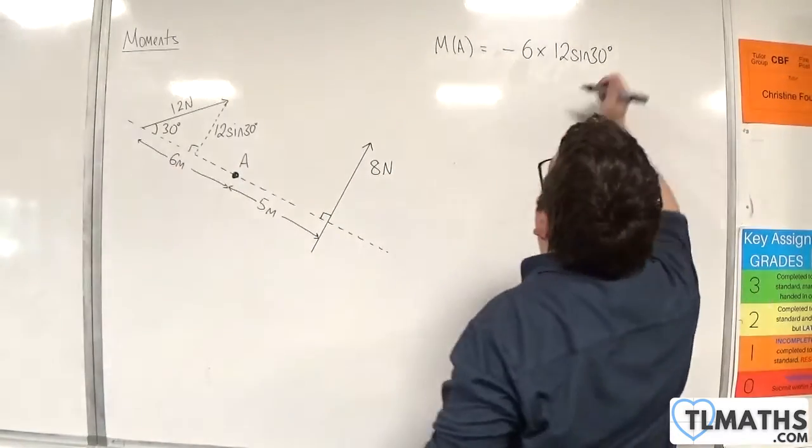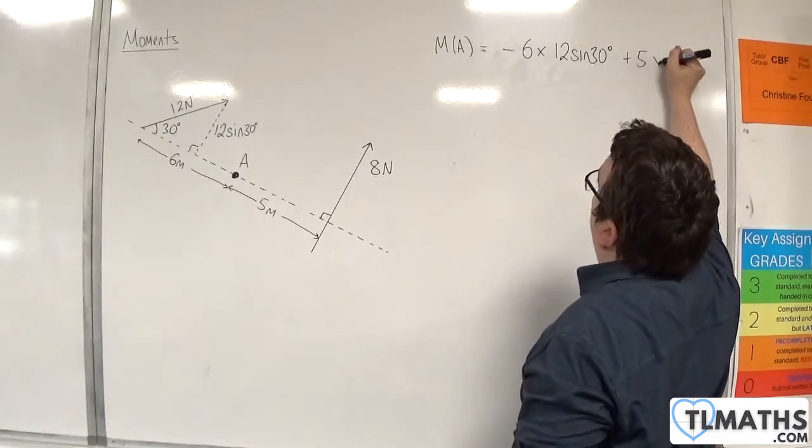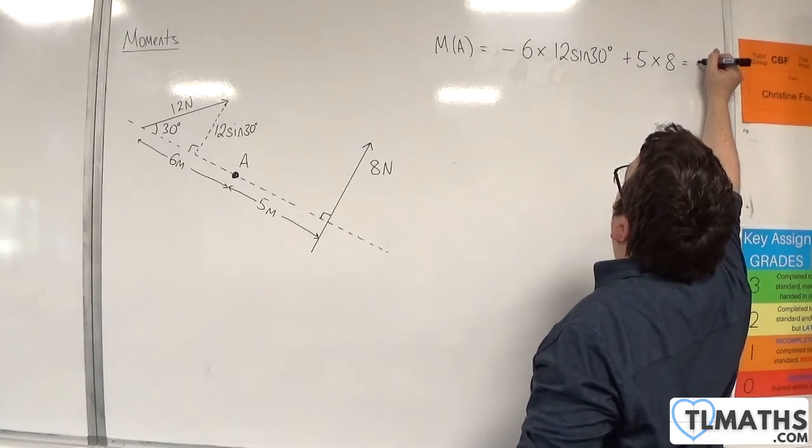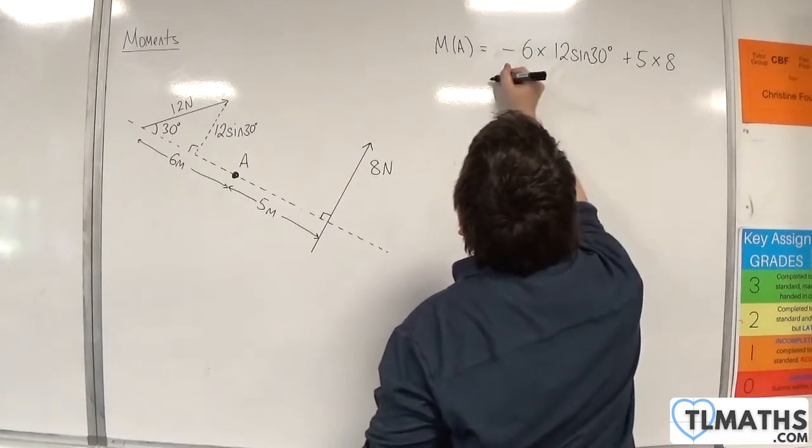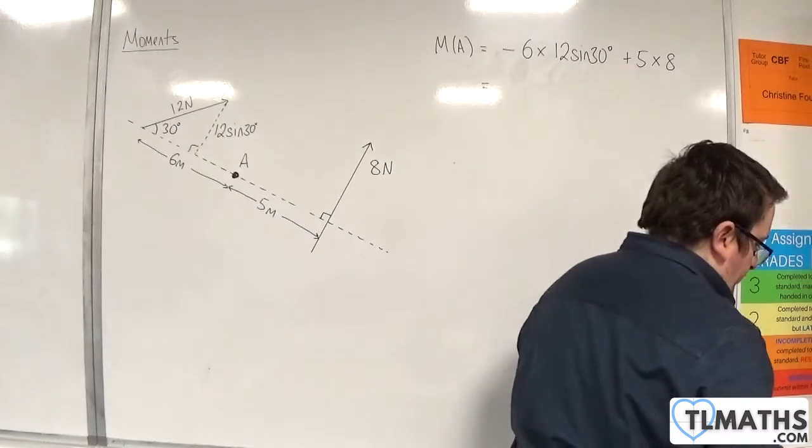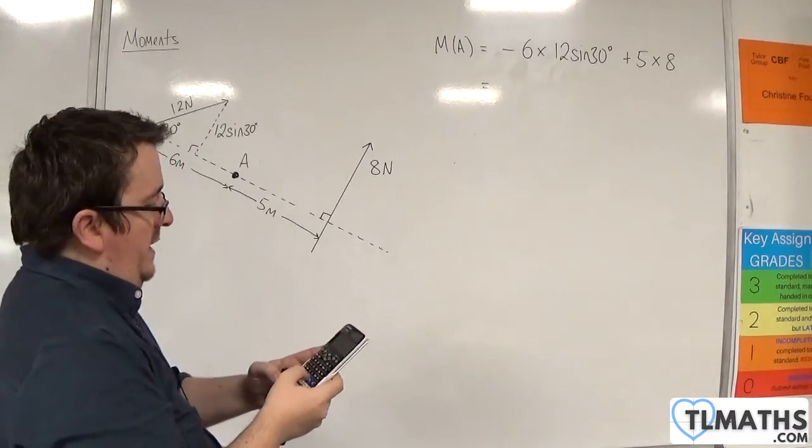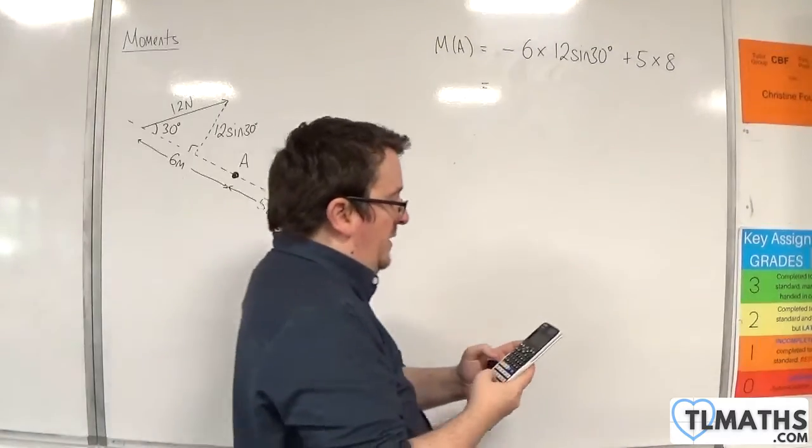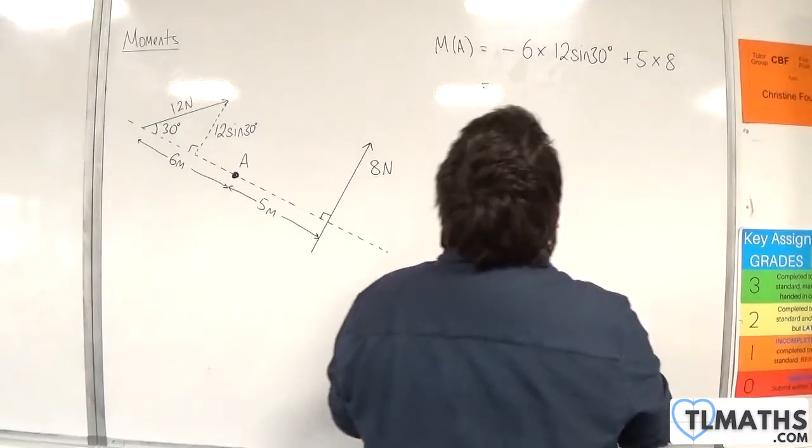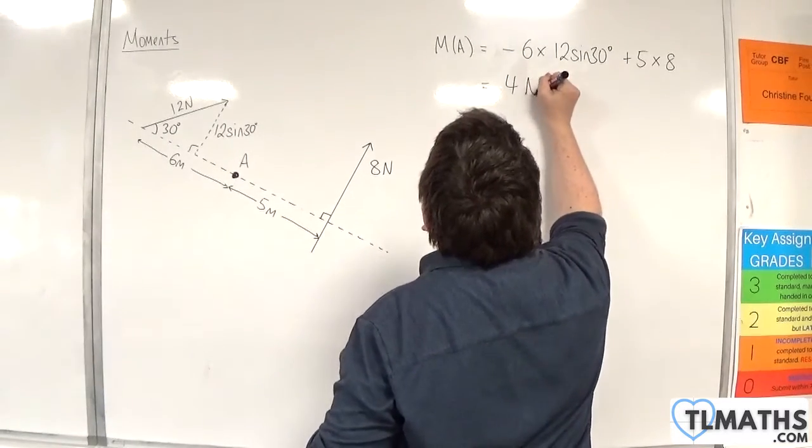And that is equal to minus 6 times 12 times sine 30 plus 5 times 8. And so that's 4. And that's Newton metres.